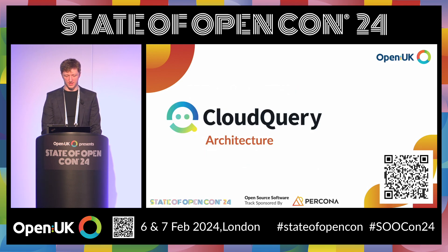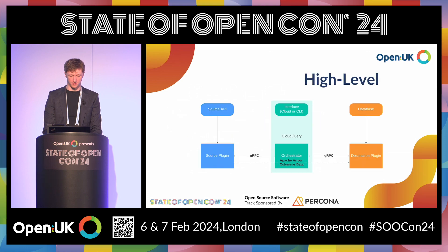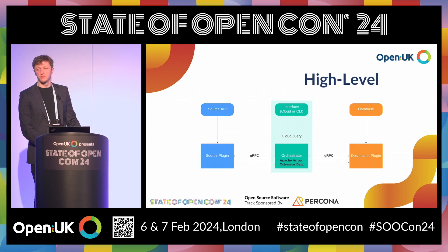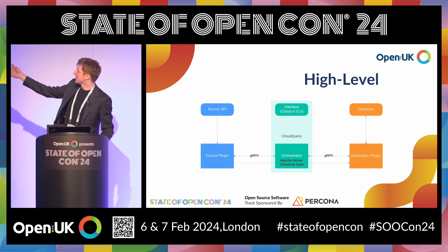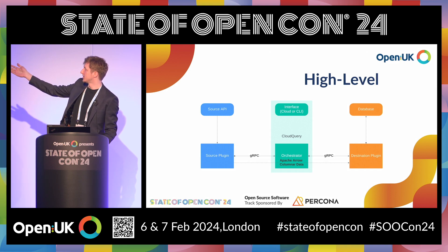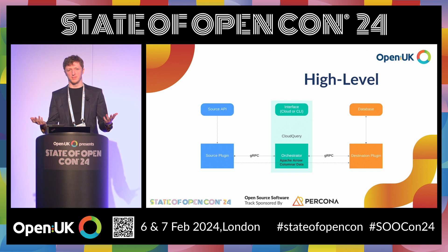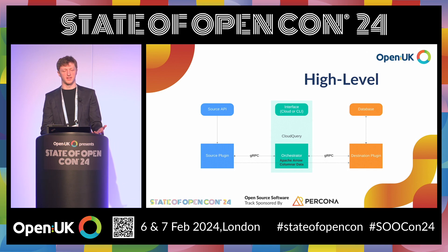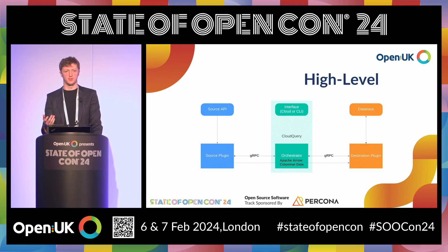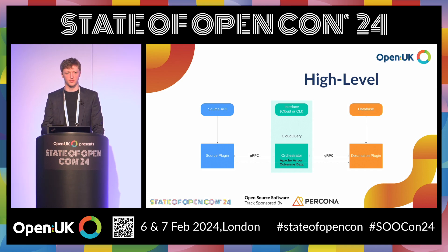So let's take a look at the high-level architecture of CloudQuery. Basically three main parts: there's the orchestrator that sits in the middle, and there are source plugins and destination plugins. Source plugins, exactly what they sound like — they enable you to extract data from pretty much any API and transform it into an Apache Arrow columnar data format, which the orchestrator then ships to the destination plugin in batches, which can then load it to pretty much any destination — it could be Postgres, it could be Neo4j, you name it.